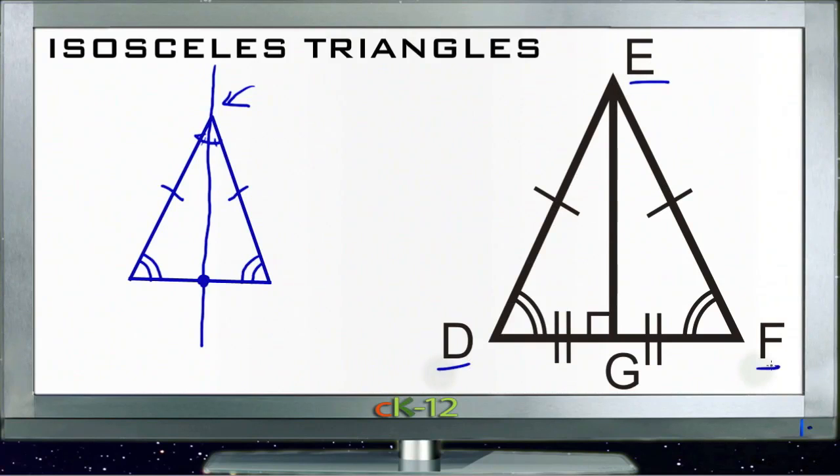Congruent down here on the bottom left and the bottom right, right here and right here. And because those are congruent, we know that the opposite sides up here and up here are congruent.